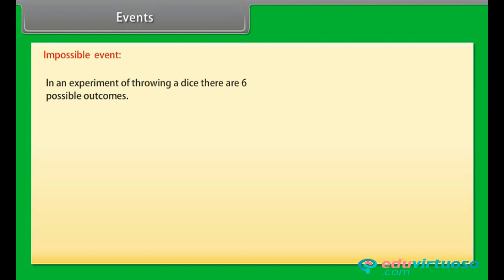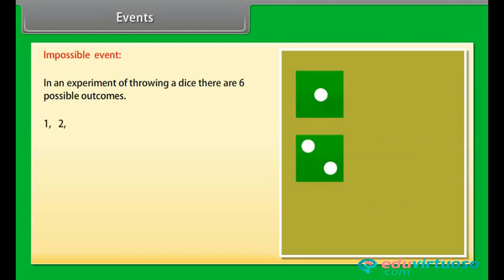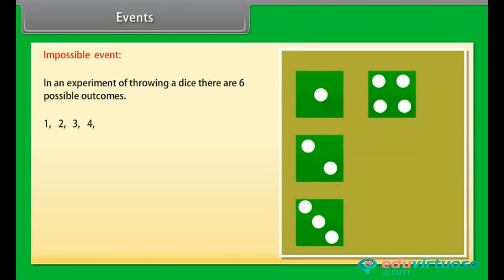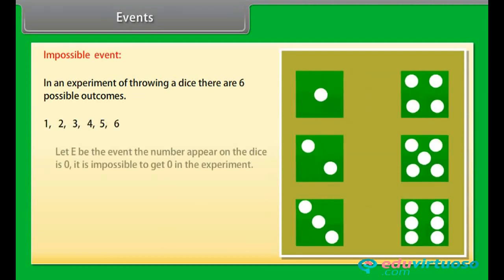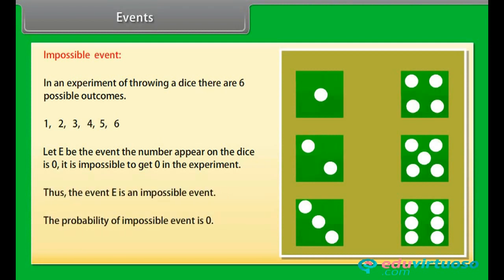Impossible event: To understand it, let's take an example. In an experiment of throwing a dice, there are 6 possible outcomes: 1, 2, 3, 4, 5, 6. Let E be the event that the number appearing on the dice is 0. It is impossible to get 0 in the experiment. Thus, the event E is an impossible event. The probability of an impossible event is 0.